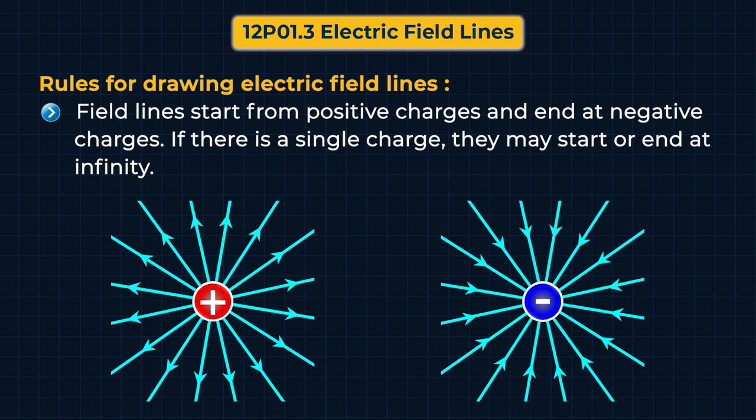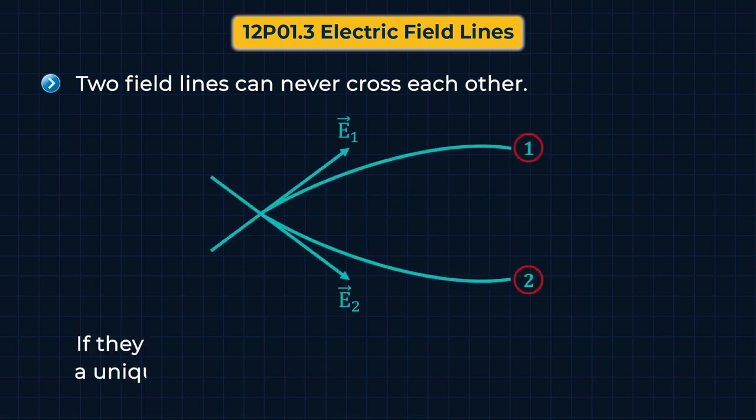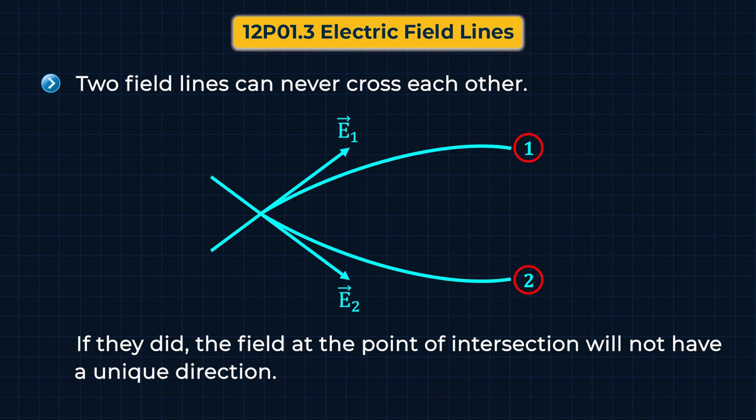अब हम second rule के बारे में पढ़ते हैं। Second rule is that two field lines can never cross each other. इसे समझने के लिए हम दो field lines लेते हैं — one and two — जो किसी point पर intersect कर रही हैं। इस intersection point पर दो tangents होंगी, यानि electric field की दो directions होंगी — e1 के along और e2 के along। इसलिए कोई unique direction नहीं होगी, इसलिए two field lines कभी cross नहीं कर सकतीं।